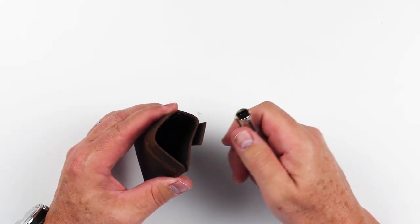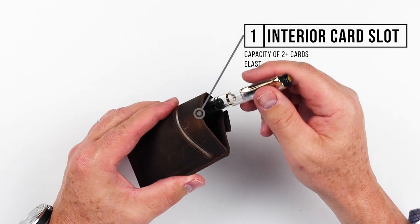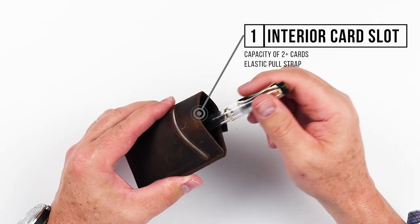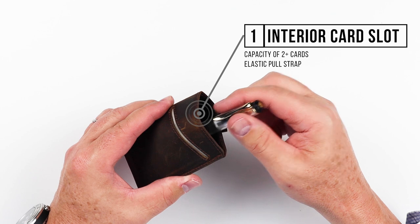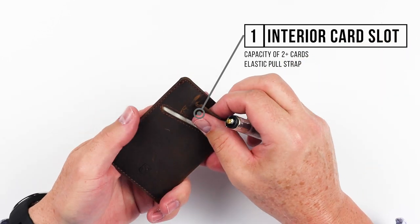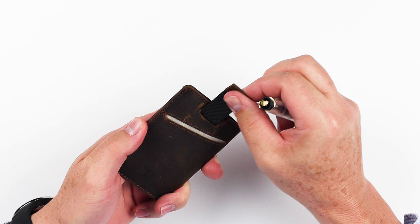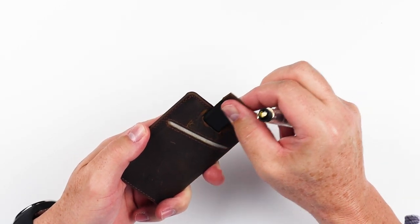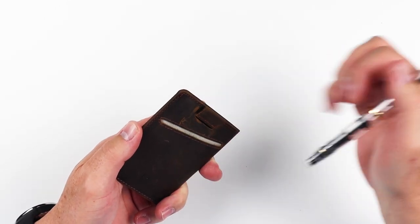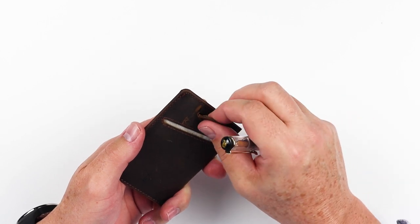As we go into the top, we have our top down. This is where cards go in, and you could probably get three, four cards in here, I imagine, as well as the ability through this pull strap to eject the cards. This is an elastic pull strap, so it retracts. It doesn't require the cards going in in order to retract it.